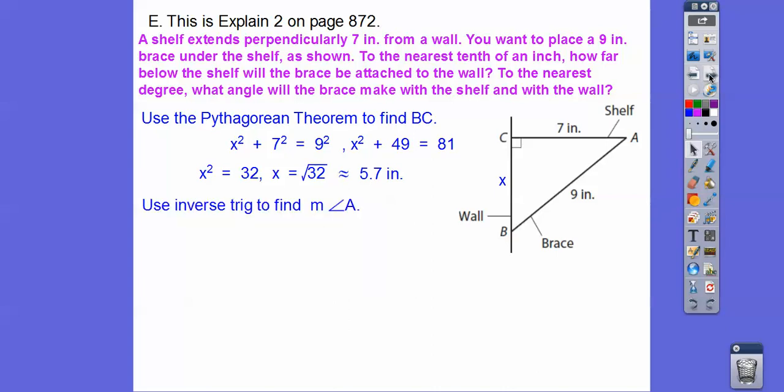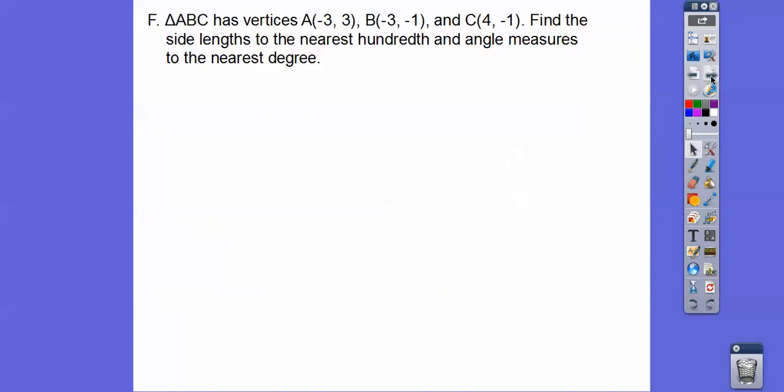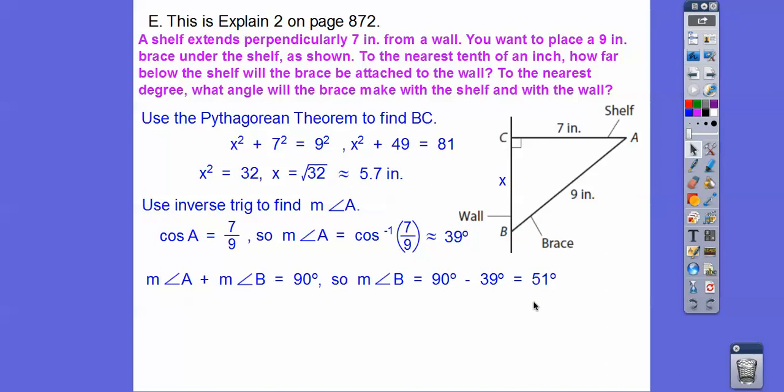So we're going to use inverse trig to find this angle right here. Okay. So here we go. So I think we're going to do the cosine of A. Yeah. The cosine is adjacent over hypotenuse. So if we hit shift cosine or second function cosine. So the measure of angle A will be cosine to the negative one, which is second function, which is about 39 degrees right there. All right. So the triangle adds up to 180. So we can get, as soon as my computer stops freezing, we can get 51 degrees right there.